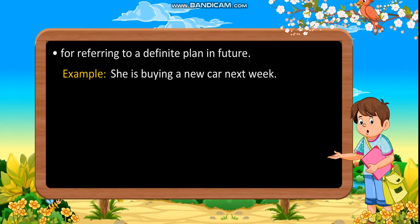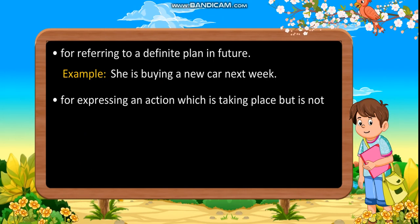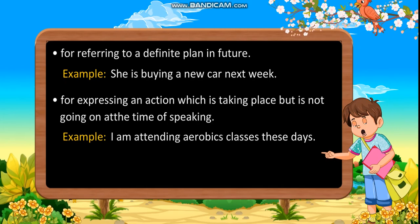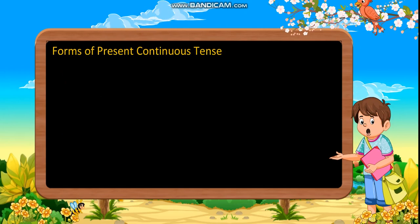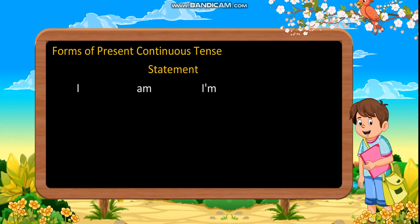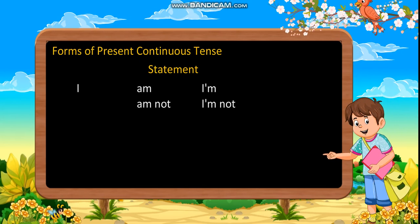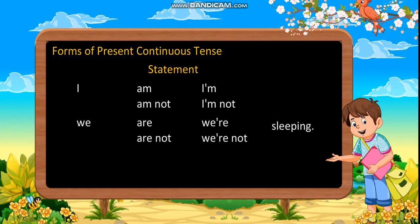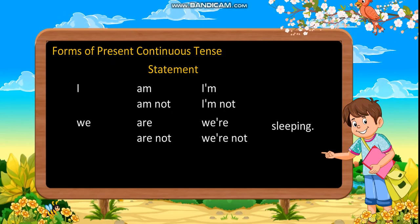For expressing an action which is taking place but is not going on at the time of speaking. Example: I am attending aerobics classes these days. Forms of present continuous tense: